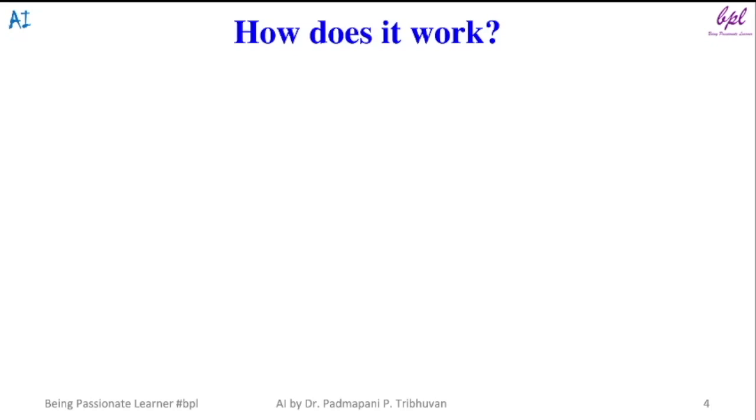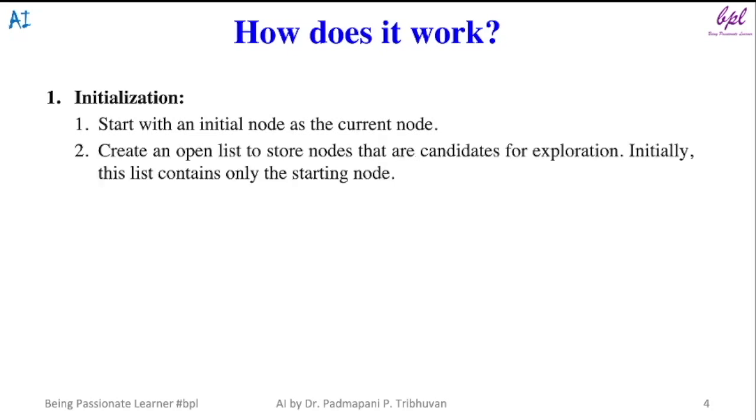Now let us see how does it work. First step is initialization. Start with an initial node as the current node. Create an open list to store nodes that are candidates for exploration. Initially, this list contains only the starting node. Create a closed list to keep track of nodes that have already been explored.